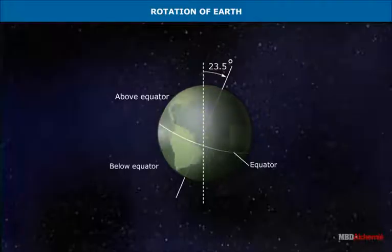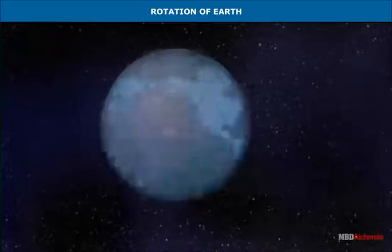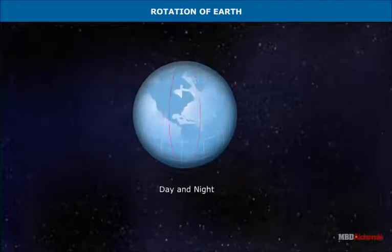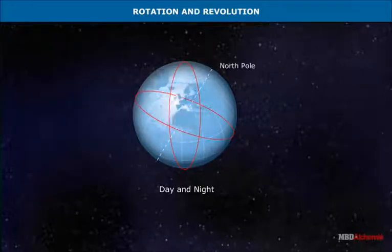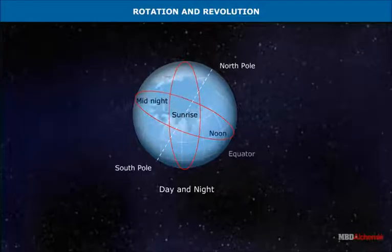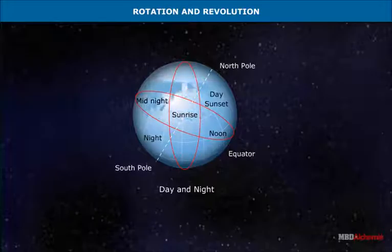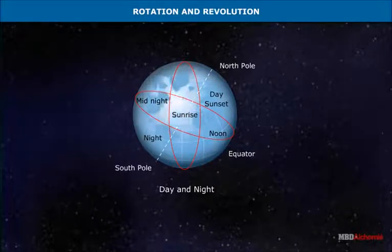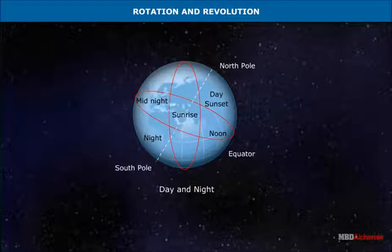The axis is inclined at an angle of 23.5 degrees with the perpendicular to the plane of the Earth's orbit. The following phenomena are caused as a result of this motion. The Earth performs this motion at a fixed speed with precision day after day. The direction of the movement is from west to east.